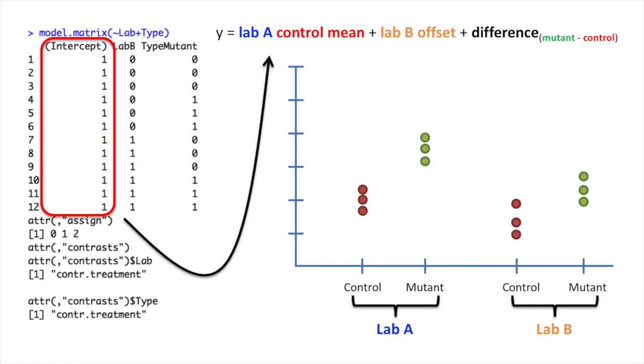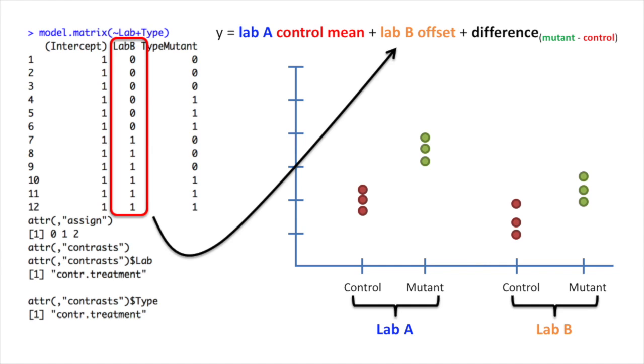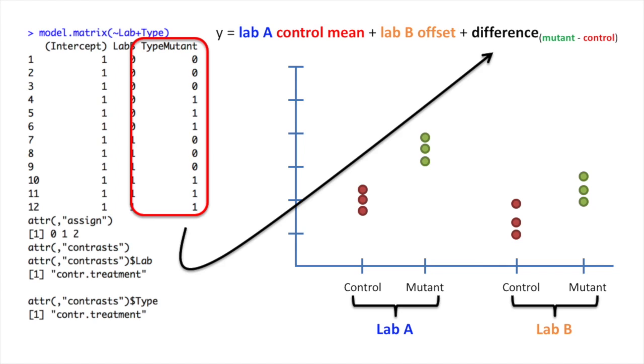The first column in the design matrix is multiplied by the term for the lab A control mean. This means that this value is on for every single measurement in the data set. The second column is multiplied by the lab B offset. That means that this offset is only on for the data generated by lab B. This last column is multiplied by the term for the difference between the mean of the mutant data and the mean of the control data.